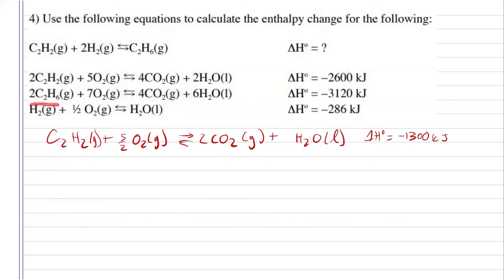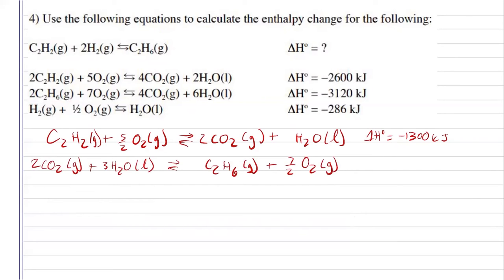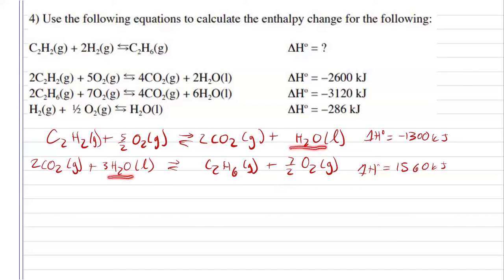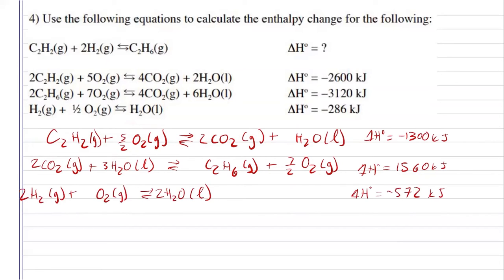For the second reaction, that's the only one that has C2H6, and I need that one as a product, not a reactant, so I'm going to flip it. But I'm also going to divide it by two, since I have two moles of C2H6 and I only need one. So flipping it and dividing it by two will change my enthalpy from negative to positive, and then dividing it by two to 1,560 kilojoules. I'm going to take a step to see what we've canceled so far. My two carbon dioxides will cancel. My oxygens are about to cancel. I have three moles of water and one mole of water here, so I have two moles of water that I need to cancel. Luckily, my third reaction has water as a product, and since I have two moles of water that I need to cancel, I can just multiply that one by two. Doing that will double my enthalpy to negative 572 kilojoules.